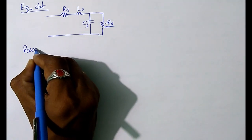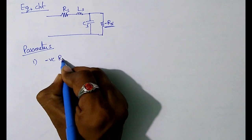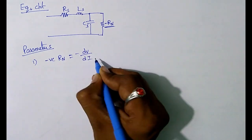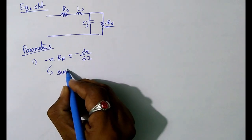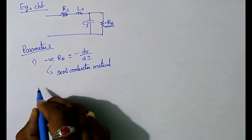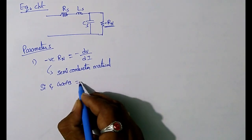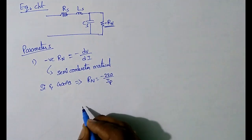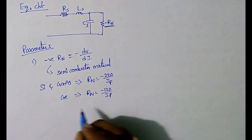Coming to the parameters of the tunnel diode. The first parameter is negative resistance RN, where R equals change in voltage divided by change in current. Its value depends upon the semiconductor material. For silicon and gallium arsenide, RN equals minus 220 divided by IP. For germanium, RN equals minus 123 divided by IP.